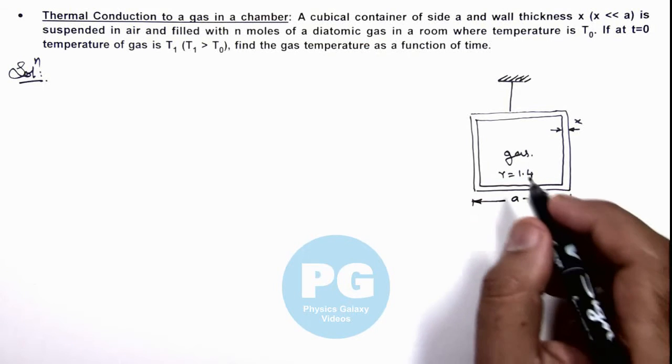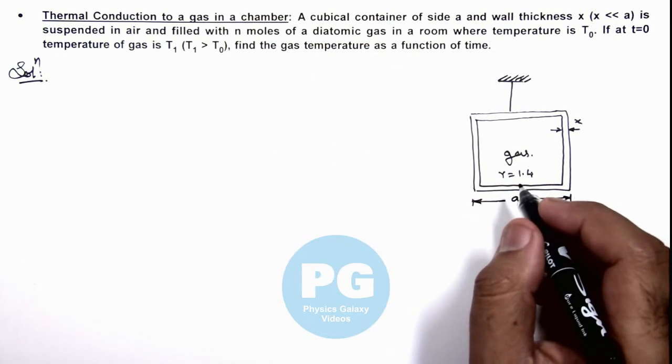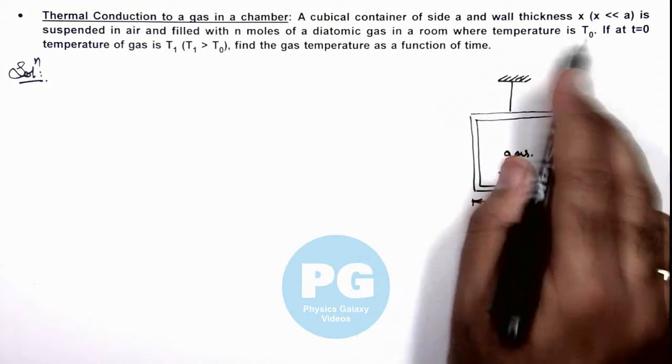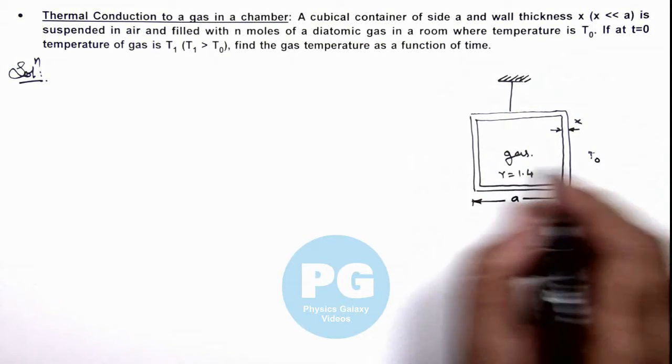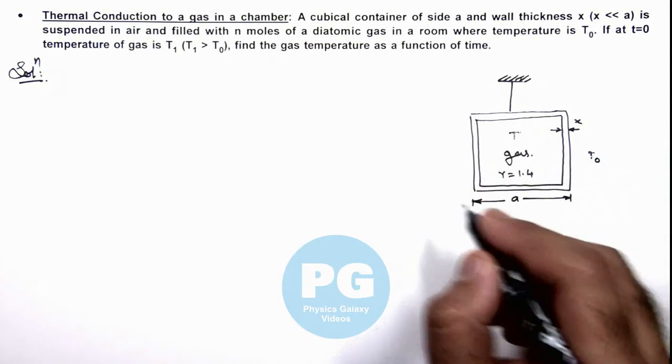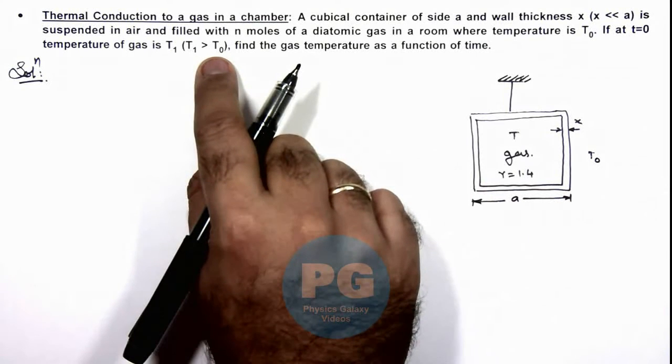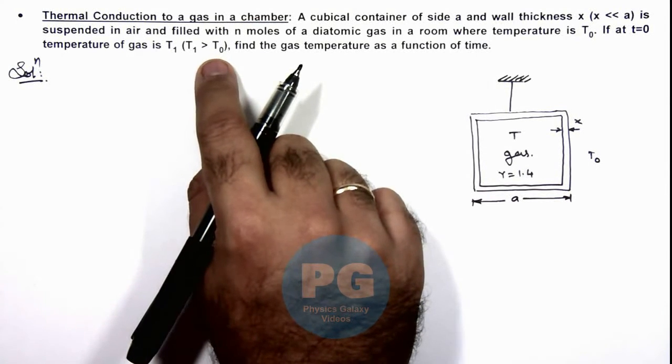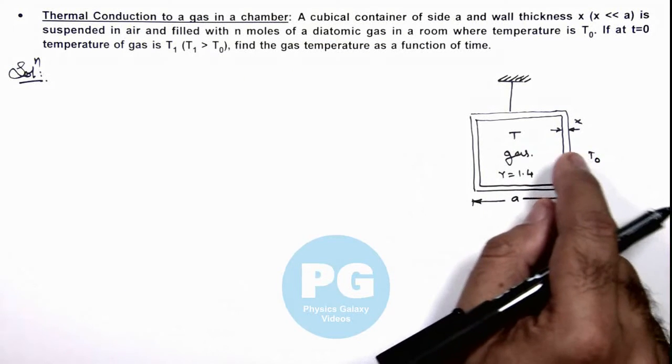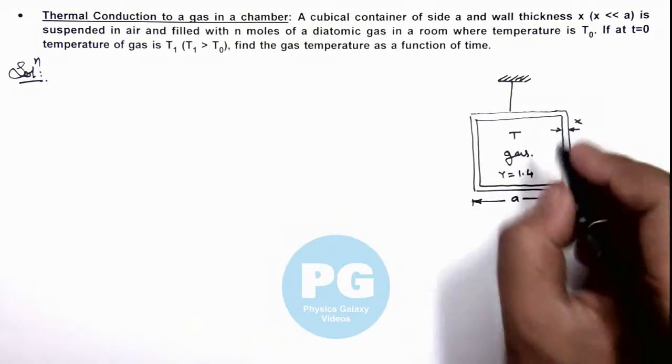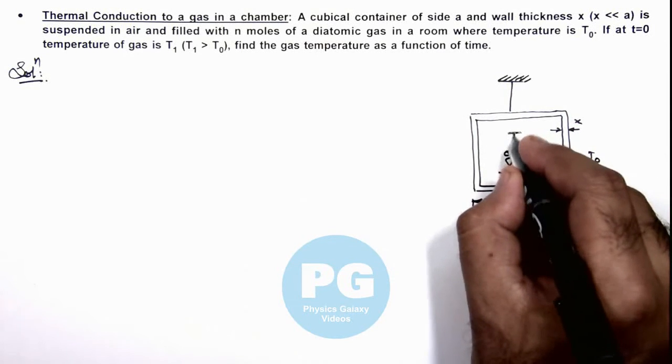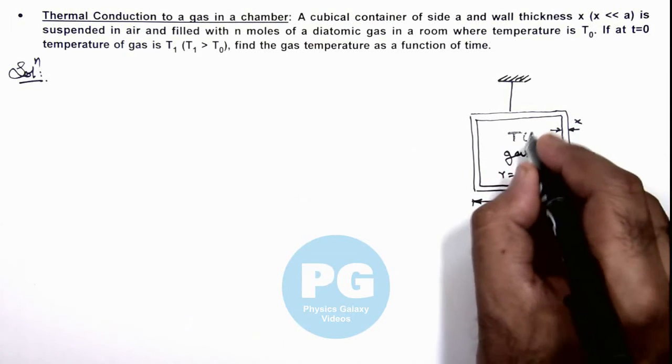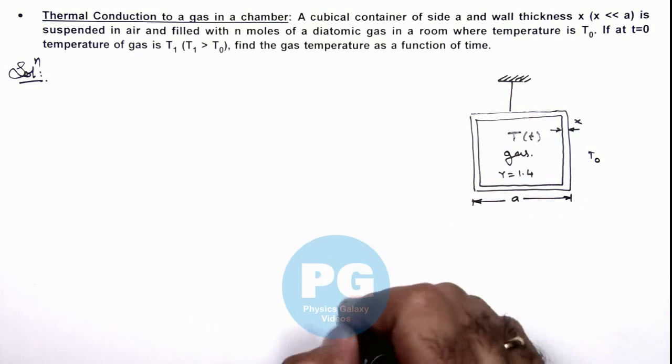Now in this situation, if we are given that surrounding temperature is T₀ and gas temperature is considered as T, so as T is greater than T₀, then we can say heat will be flowing outside from the gas. So in this situation we are given the gas temperature initially is T₁, so we can consider at any time gas temperature to be equal to T.